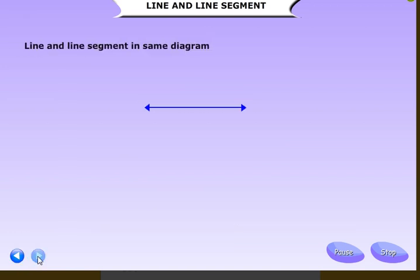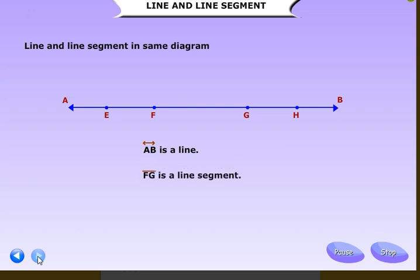The next, line and line segment in the same diagram. Both line and line segments can be shown in a single diagram. Line segment is actually part of a line. See the diagram below. AB is a line. FG is a line segment. EF is a line segment. GH is also a line segment.